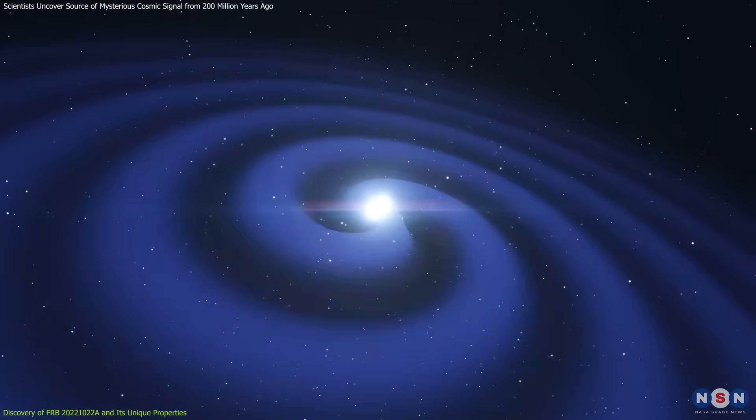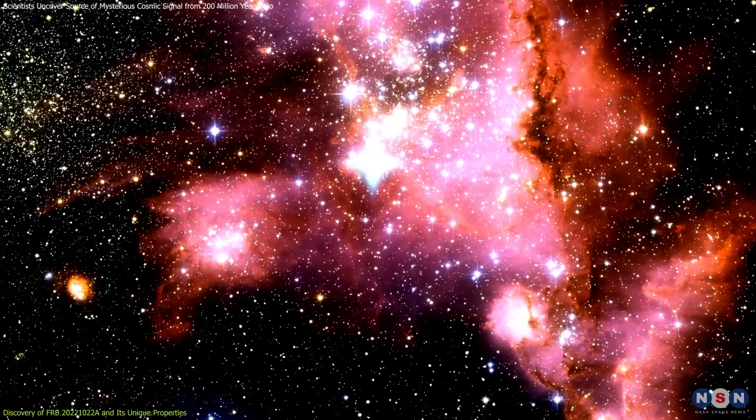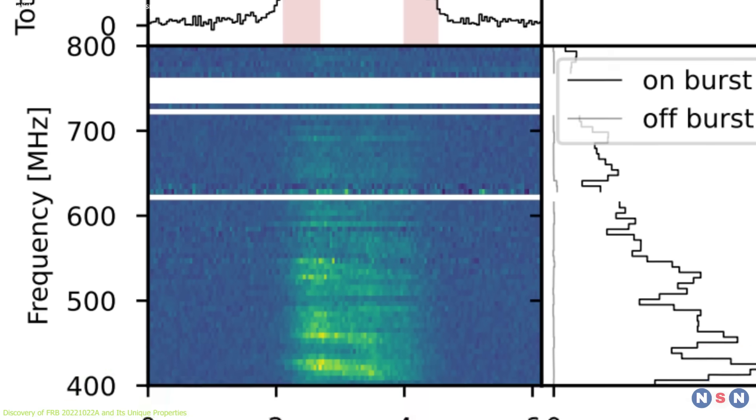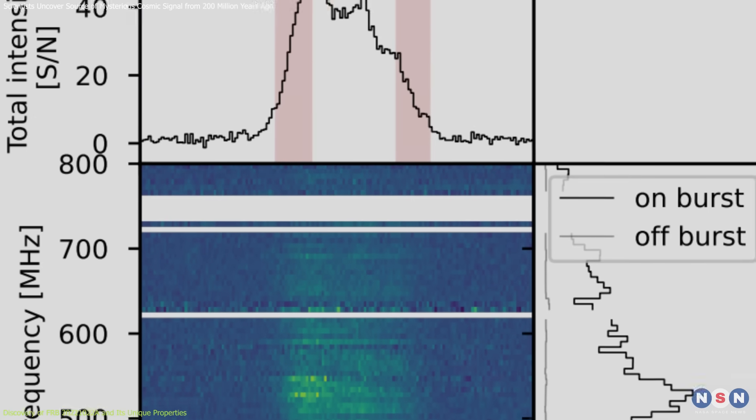Previously, theories ranged from collisions between stellar remnants to shockwaves far from the star. This new evidence narrows the possibilities and highlights the role of extreme magnetic environments in creating these bursts.